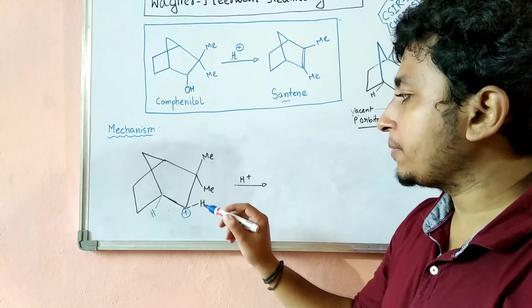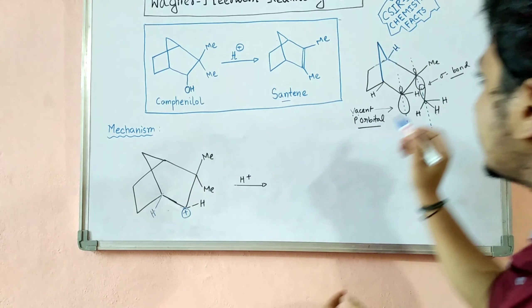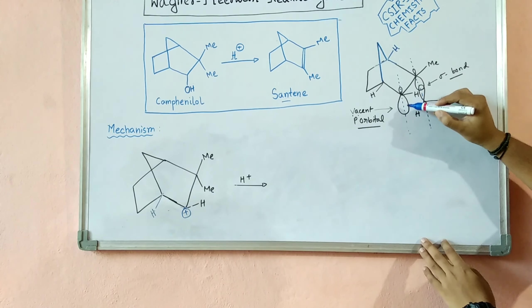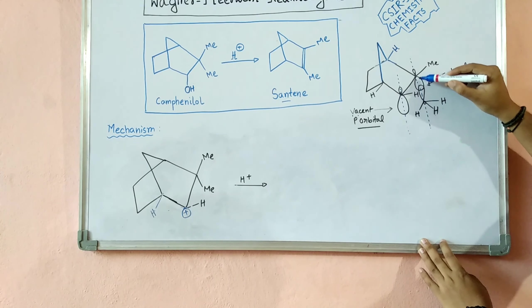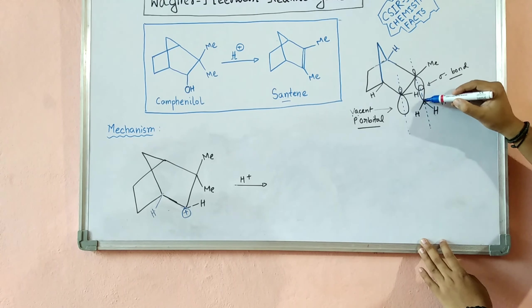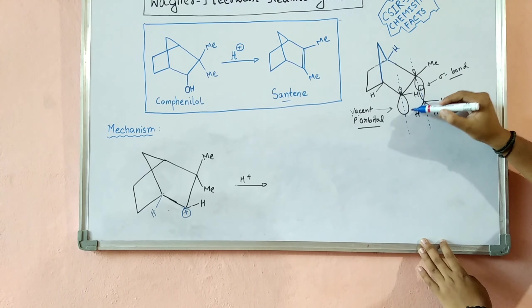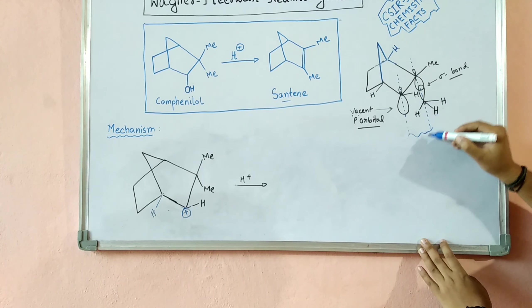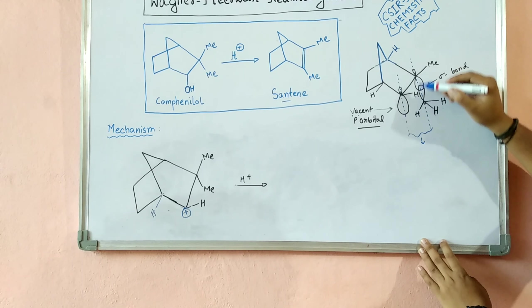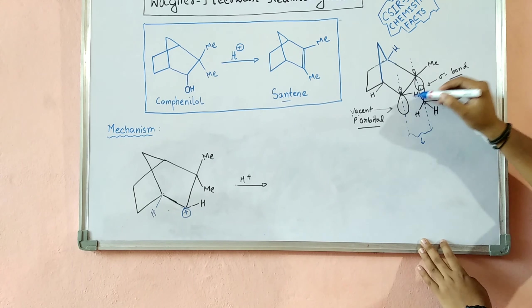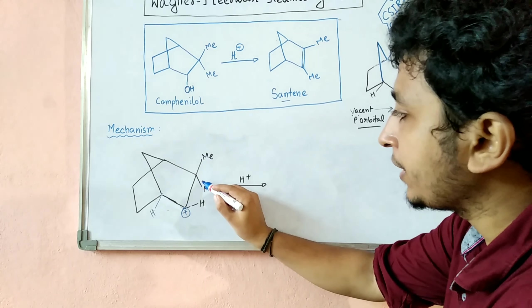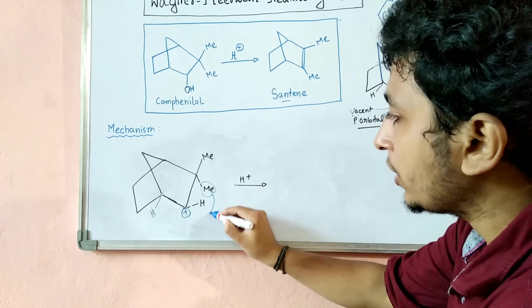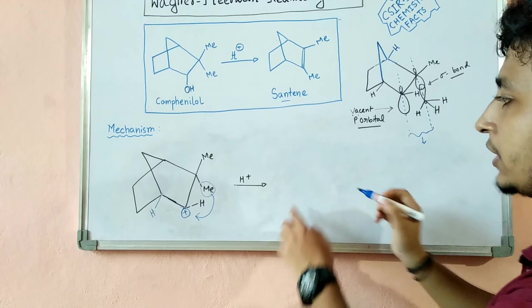The methyl group can shift to the carbocation center. Looking at the structure, this is the vacant p orbital of the carbocation, and the sigma bond of the adjacent carbon and methyl group is parallel to it. Because these two are parallel to each other, the methyl can easily shift — a methyl migration takes place.